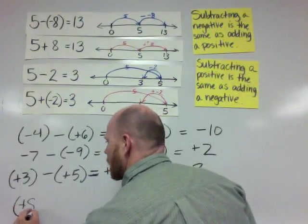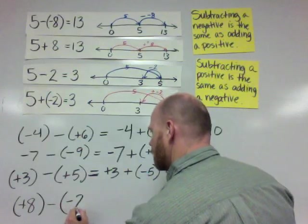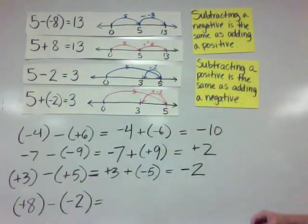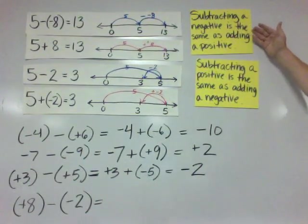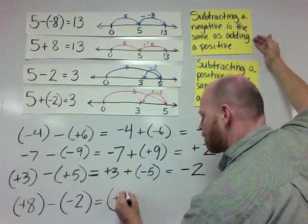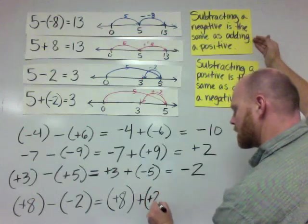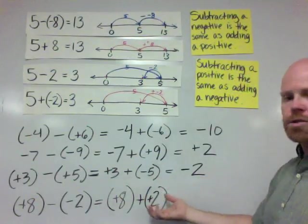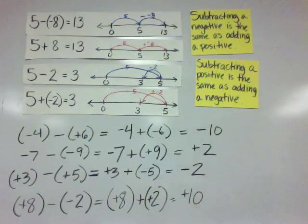The last example: positive 8 minus negative 2. We are subtracting a negative, and subtracting a negative is the same as adding a positive. So we're going to have positive 8 plus positive 2 — a hop of 8 units to the right and 2 units to the right — leaving us with the answer of positive 10.